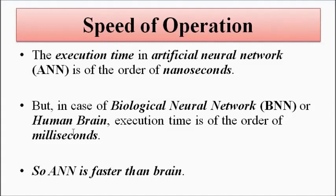Normally, the amount of time which humans take to process information and respond is of the order of milliseconds. So obviously, the artificial neural network is comparatively much faster than the human brain. Here the artificial neural network leads in terms of speed of operation or execution time, because its execution time is of the order of nanoseconds compared to milliseconds for the human brain.